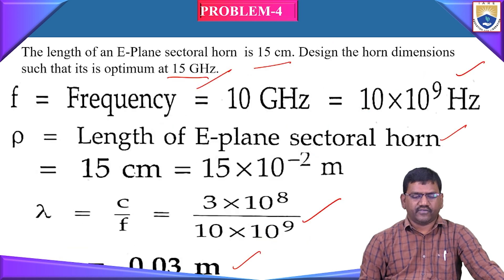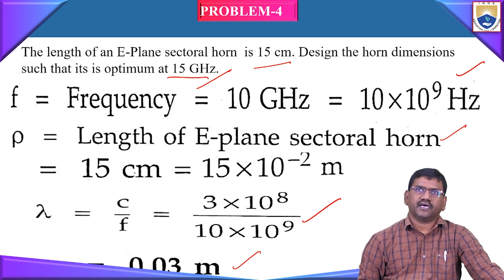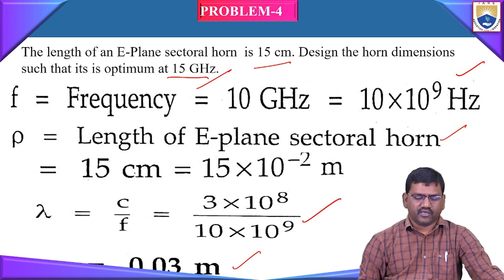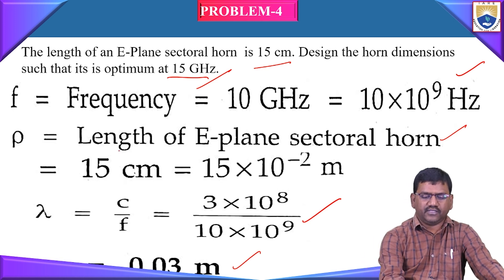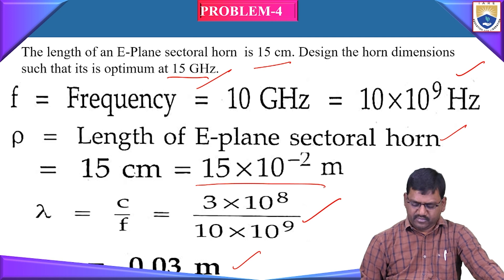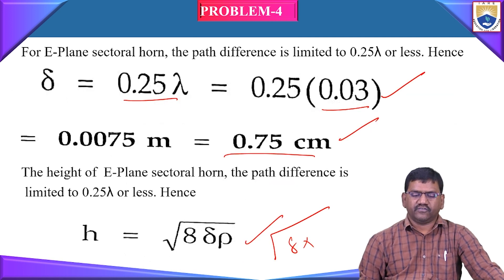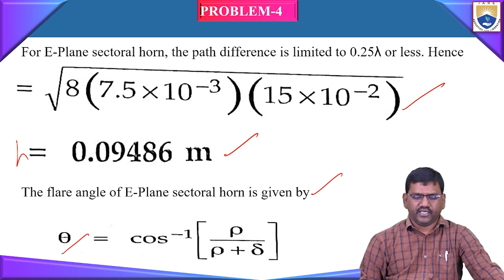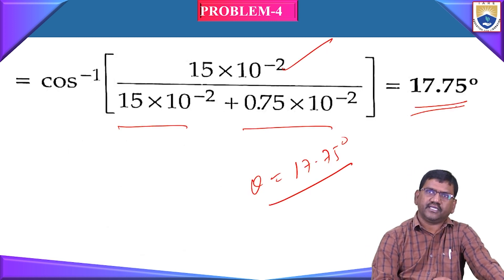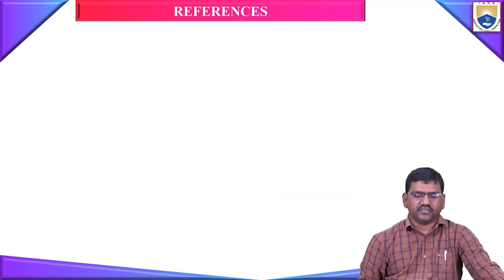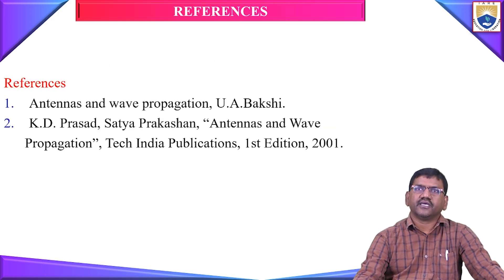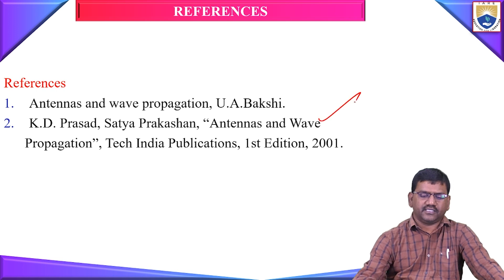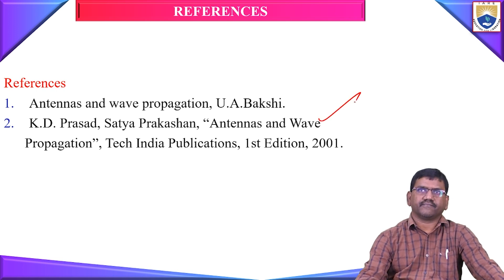From the given data, we can find out the horn dimensions: the flare angle is 17.75 degrees and the height h = 0.09486 meters. With this, we close the session today. For any references, you can refer to A.K. Bakshi or Kraus — Antennas and Wave Propagation. Thank you. Like, share and subscribe, and hit the bell icon for more updates.